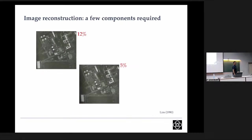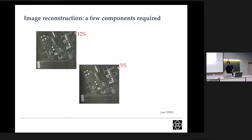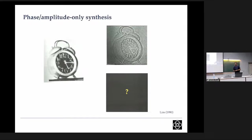Even if you take only 5% of the Fourier components, there is still a strong resemblance to the original image. So only a few dominant, prominent components are required to make reasonable measurements. This means we have a lot of degrees of freedom to play around with. This is what I want to impress upon by showing this example.